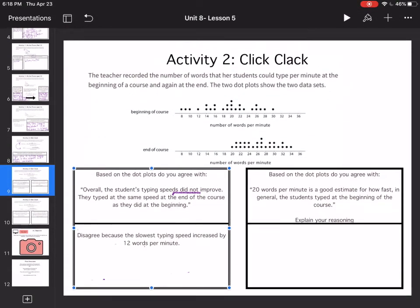So then it says 20 words per minute is a good estimate for how fast, in general, the students typed at the beginning of the course. Well, I know that I have all of these dots. It's not telling me how many. So I'm going to count really quick.